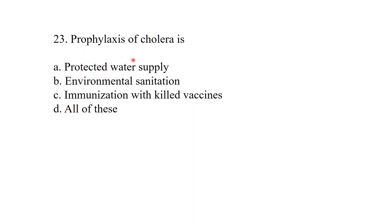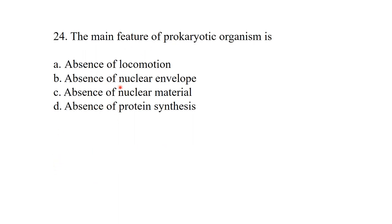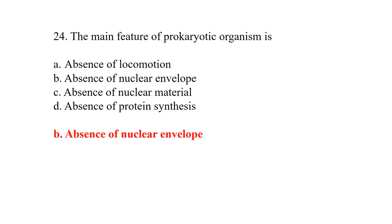Prophylaxis of cholera is environmental sanitation. The main feature of a prokaryotic organism — absence of locomotion? No, prokaryotes can move. Absence of nuclear envelope? Yes, that is the best answer. Absence of nuclear envelope is the main feature of the prokaryotic organism.